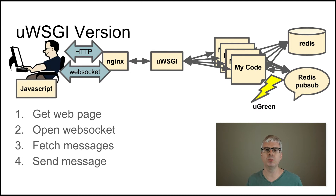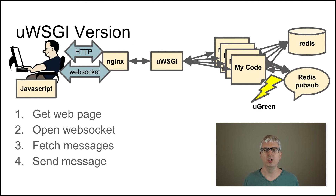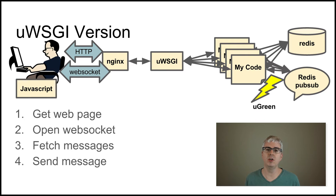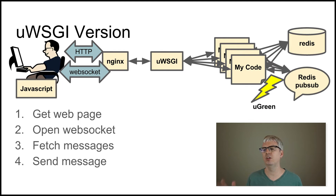When nginx gets a WebSocket request it doesn't deal with it directly. Instead it passes it through to another process on the same machine called uWSGI, communicating through a local Unix socket. uWSGI, upon receiving the WebSocket request, launches the Python code I wrote inside a Python environment and hands it the WebSocket request. My code, now running in a thread, says there's nothing to do yet — it has to wait until something interesting happens. So the Python code running inside uWSGI suspends itself and waits. The suspension uses the gevent thread suspension mechanism to allow this, so my code sits there suspended with an open WebSocket connection, waiting for something interesting.